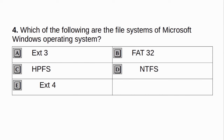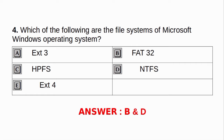Which of the following are the file systems of Microsoft Windows operating system? a. EXT3. b. FAT32. c. SPFS. d. NTFS. e. EXT4. Answer: b and d.